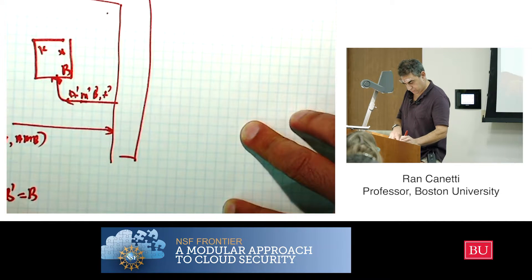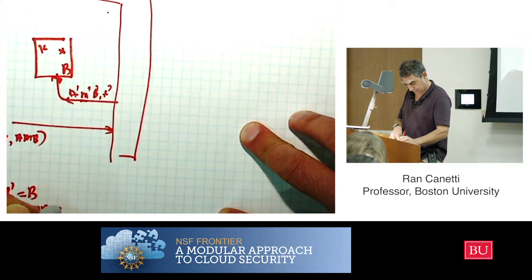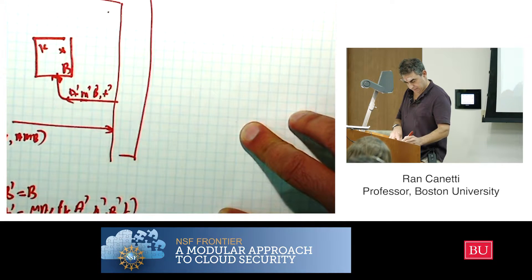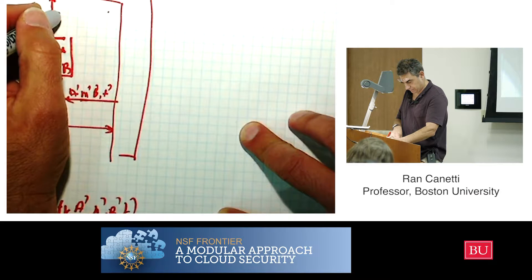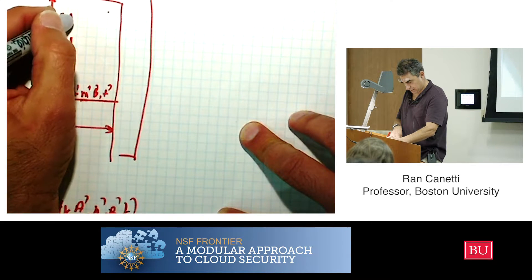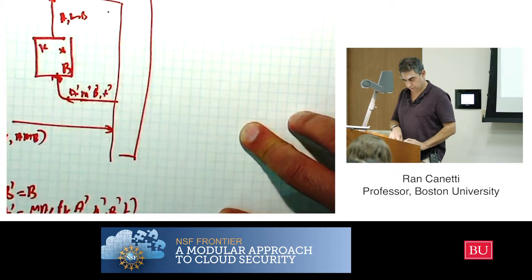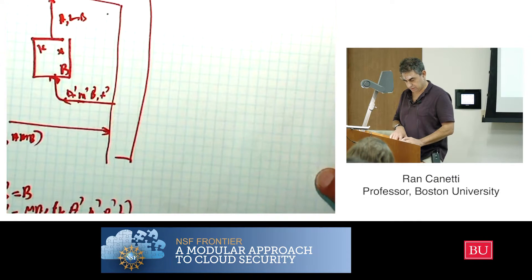And is it true that T tag equals MAC with key K on A tag, M tag, B tag? If this check holds, then it's going to output A, M to its environment. Because that means that it's successful at sending the message.